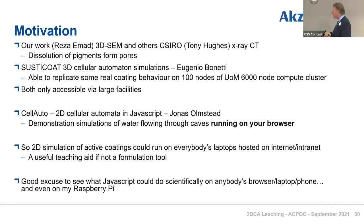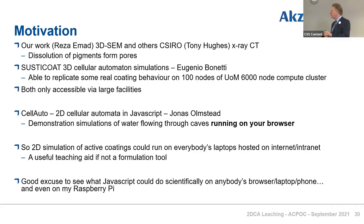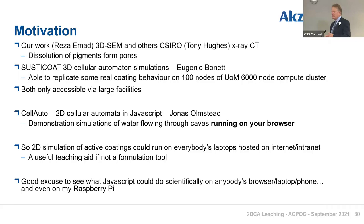I came across somebody who'd written a really nice little JavaScript 2D library. One of the simulations he showed was water going through a cave system — he used the cellular automata to generate a 2D cave, put water in that cave, and you could see the water flowing down through it. That looked to me a bit like a coating, which is what got me interested. The point is this can run on your mobile phone, your computer, or anybody's browser — it doesn't need a computer facility.